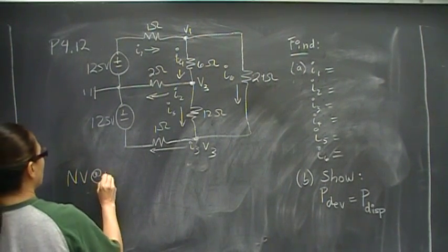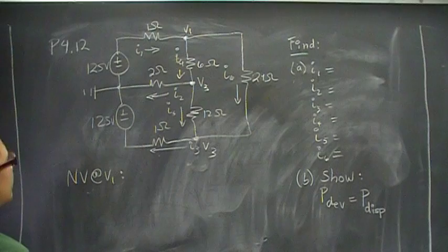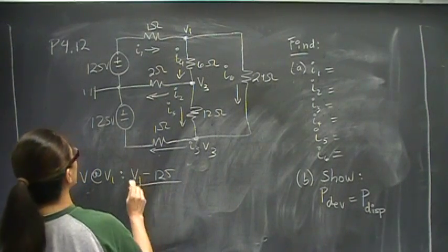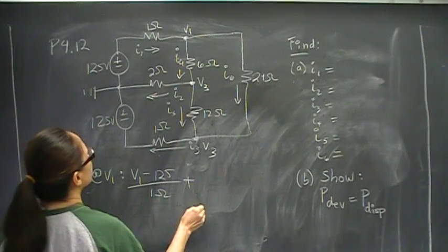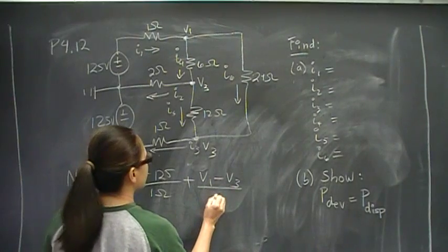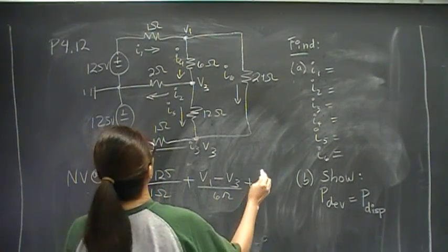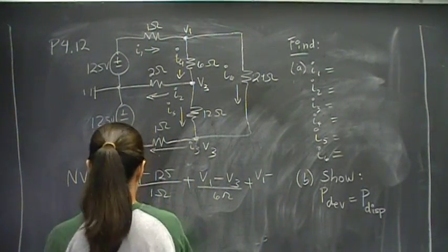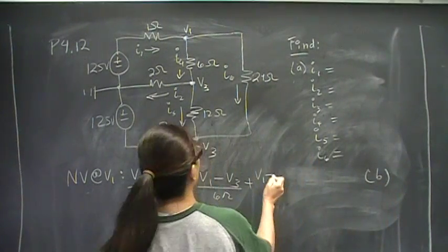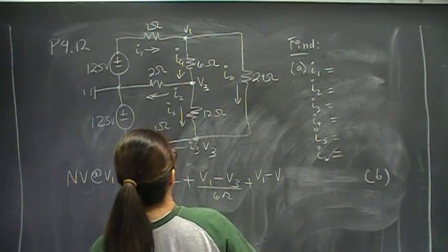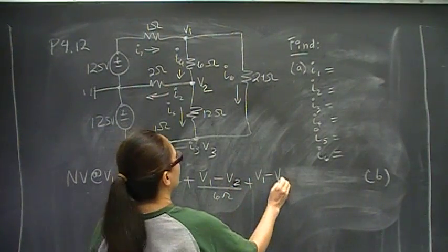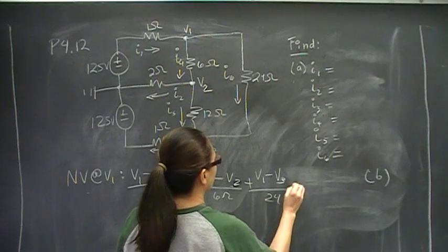Node voltage at V1 will give us V1 minus 125 over 1 ohm plus, we're basically summing the currents, V1 minus V3 over 6 ohms plus V1 minus V2 over 24, that's equal to zero. That's my first equation.